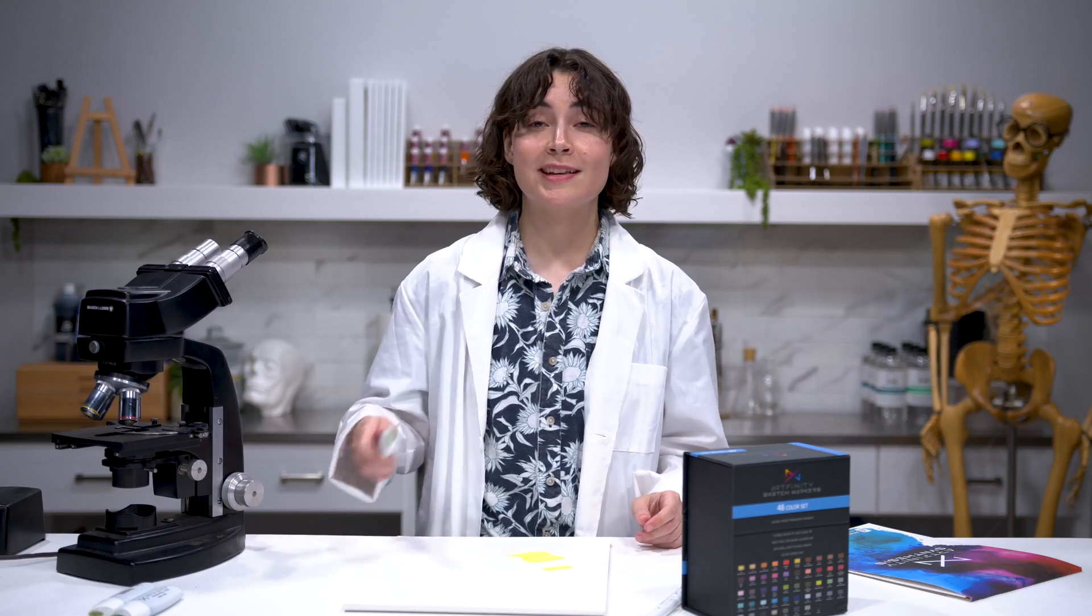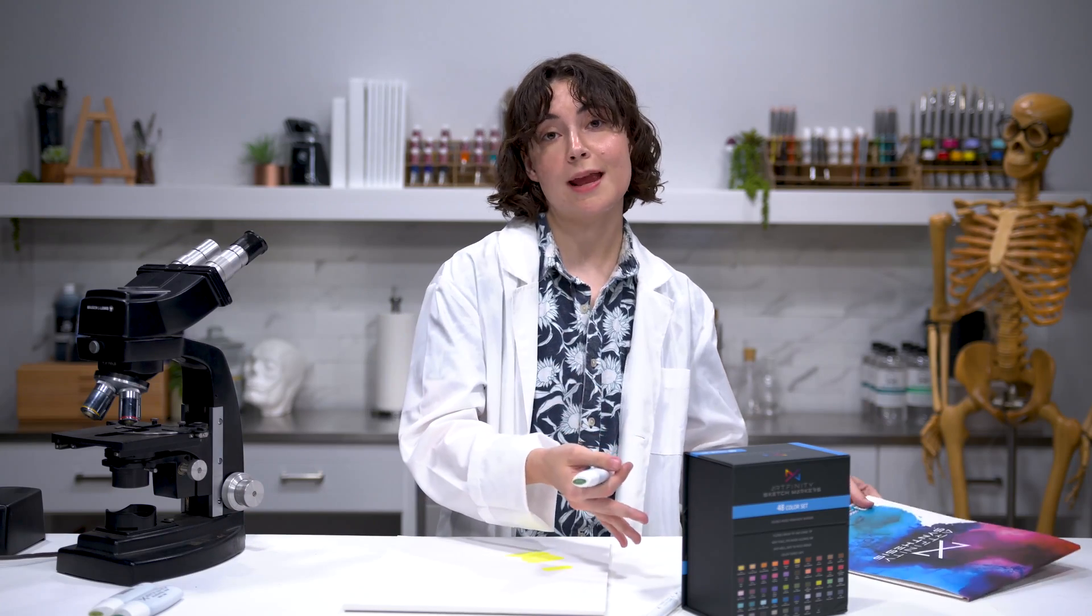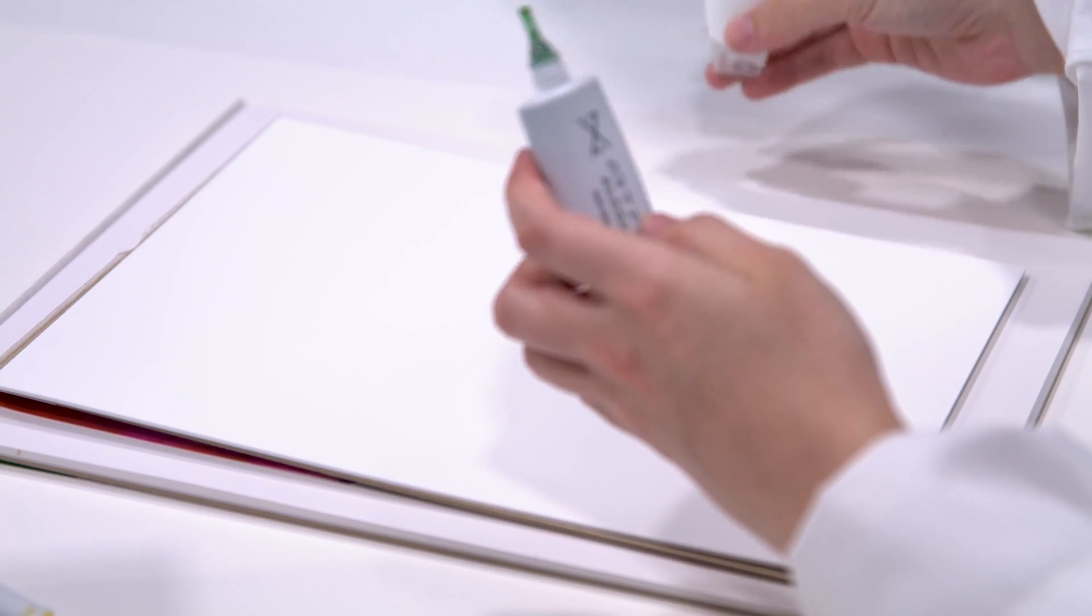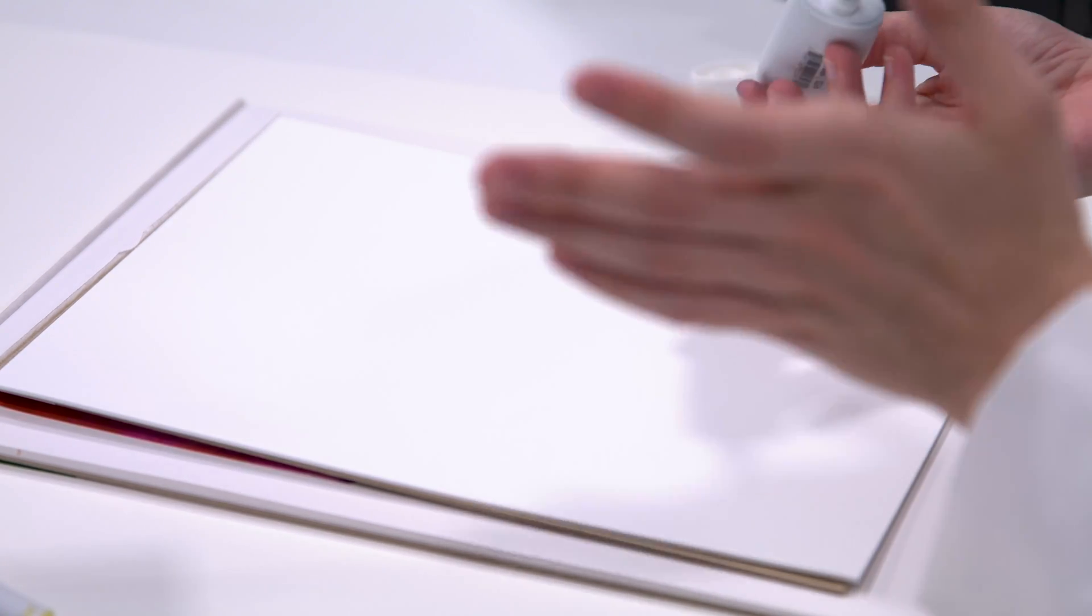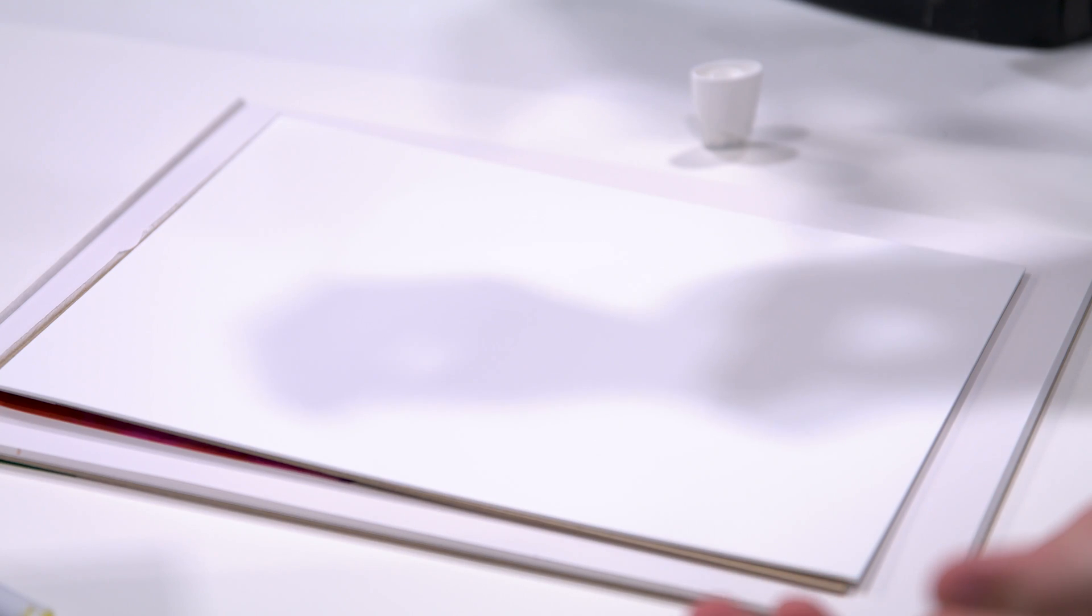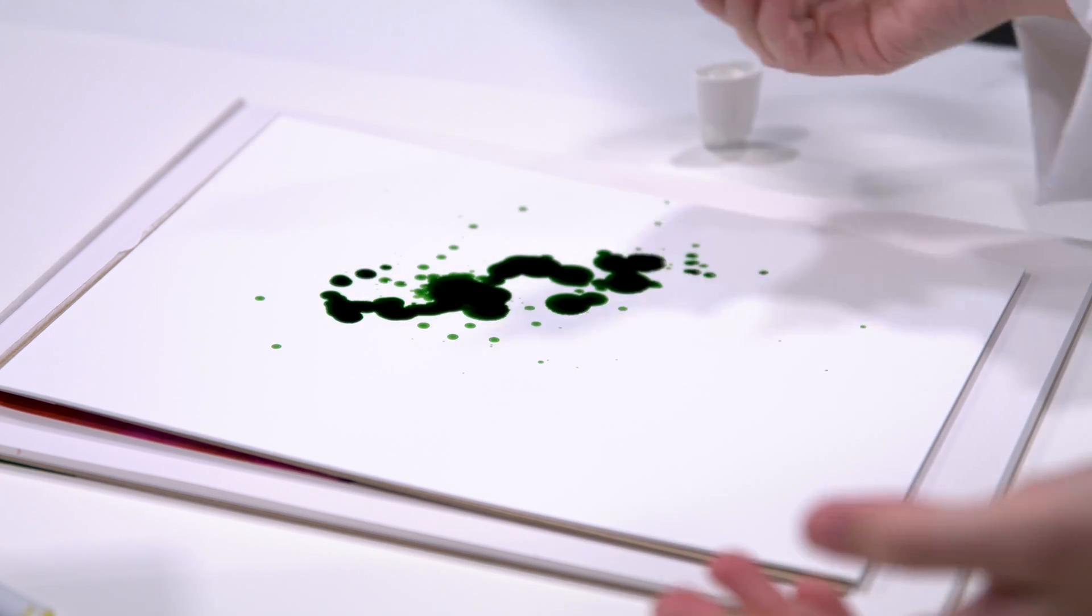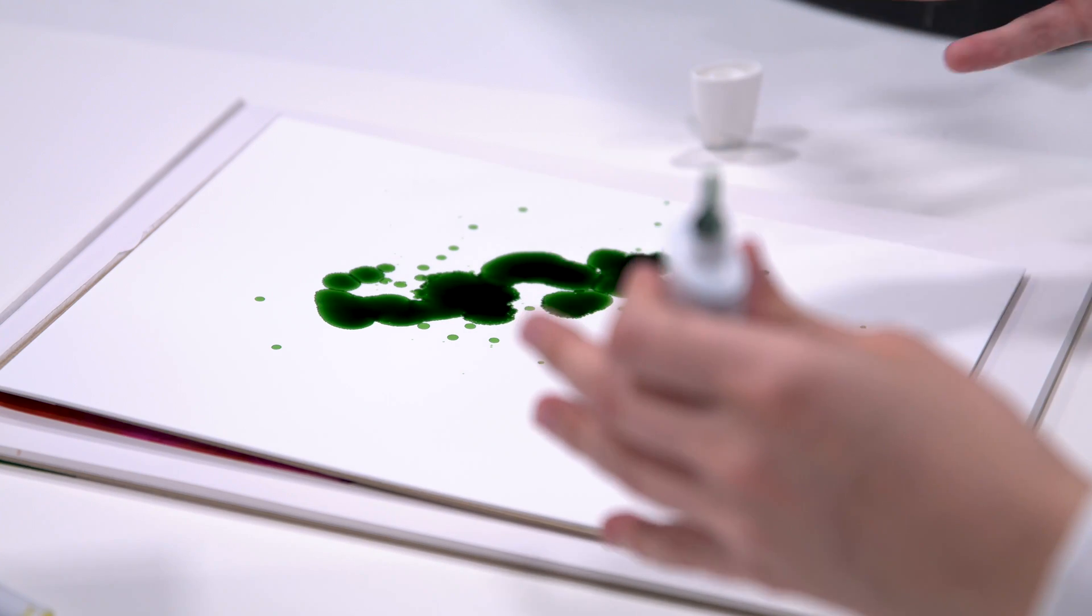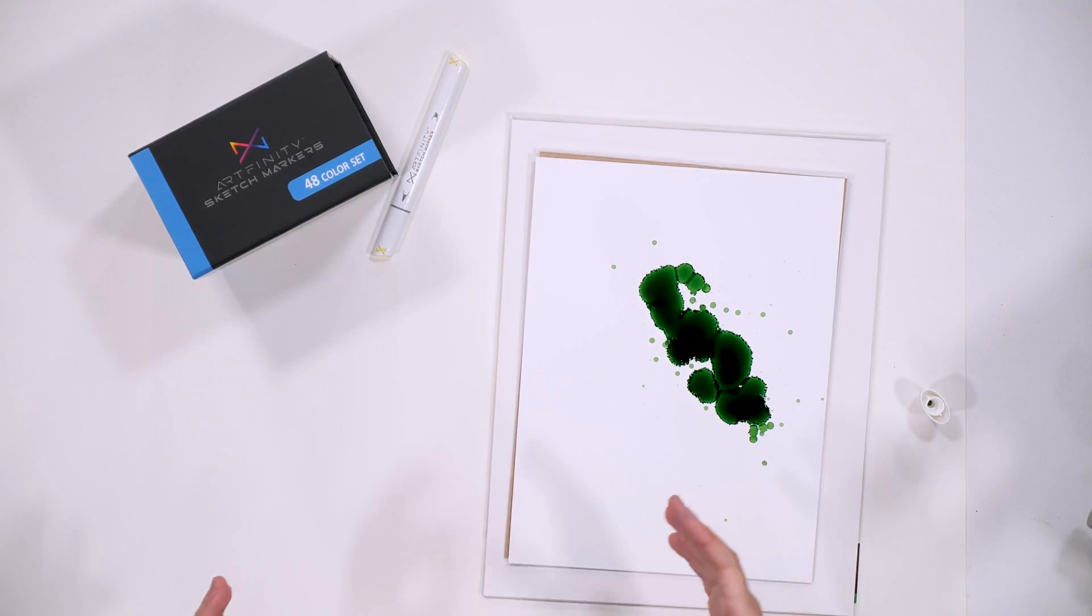The other thing we have here is alcohol ink, which is essentially the same thing that's in this marker, just a lot more of it. One of the other things that makes dye work so well with alcohol is that alcohol is of much weaker surface tension than water does, which means if I pour out this alcohol ink here, you can see how quickly it disperses and spreads out and gets that really nice flowy effect that a water-based product wouldn't get.